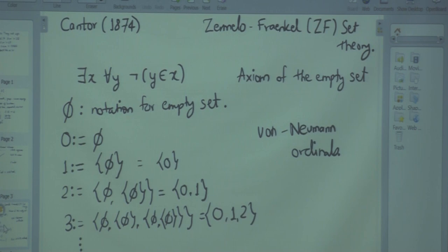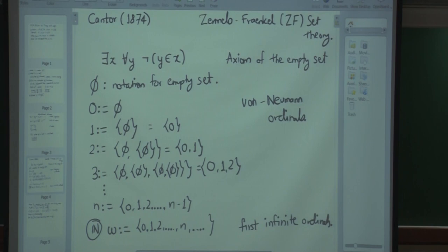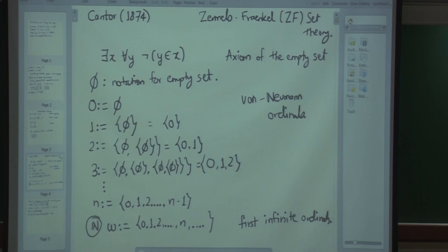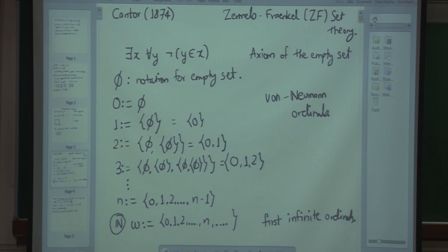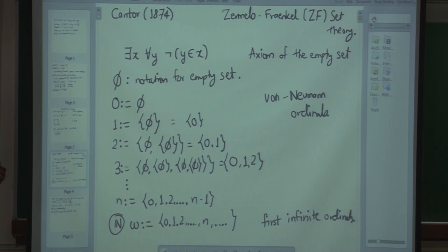This is clear from the von Neumann ordinals: empty set is 0, and 1 is the singleton {∅}, but 1 is both a set and an element of 2, 3, and all the others. There is no distinction between elements and sets. In tomorrow's class we will continue constructing new sets and continue with naïve set theory for a while.